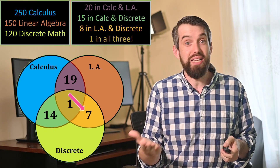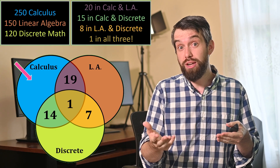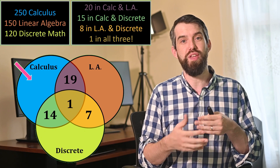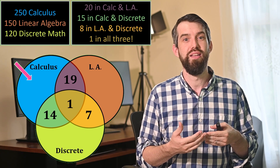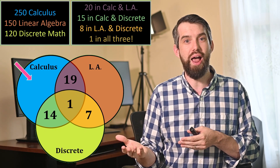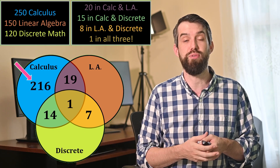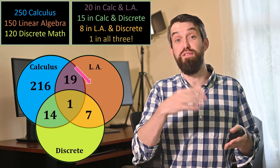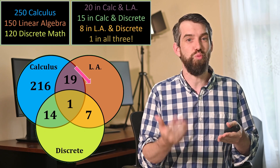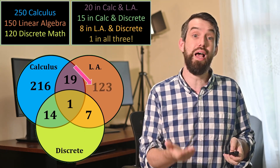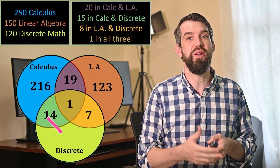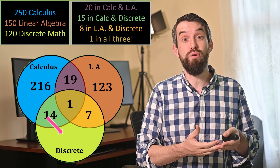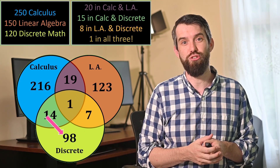Then I've got the three outside regions. For the portion in calculus but not linear algebra or discrete math: I start with 250 and subtract 19 plus 1 plus 14, which is 34, leaving 216. For linear algebra only: 150 minus 19 plus 1 plus 7, which is 27, leaving 123. And for discrete math only: 120 minus 22 leaves 98 students.